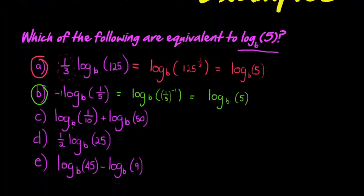Next one. This one, log base b of one-tenth plus log of the same base and 50. Now we know that when two logs are being added together, the inputs may be multiplied. So log of base b, now the inputs are multiplied.